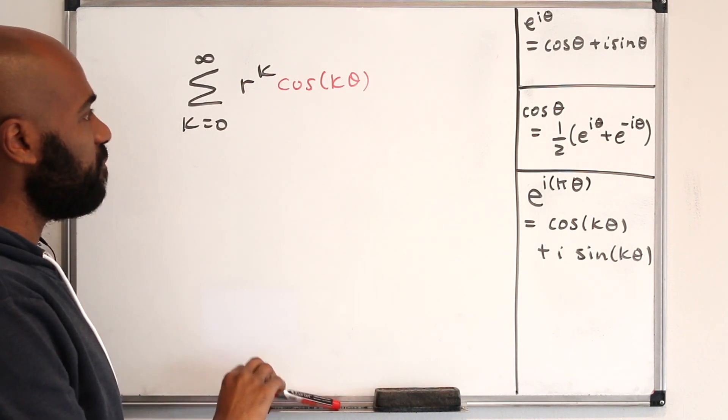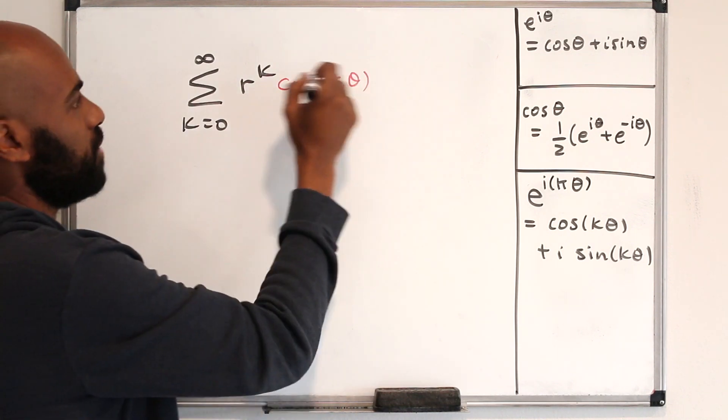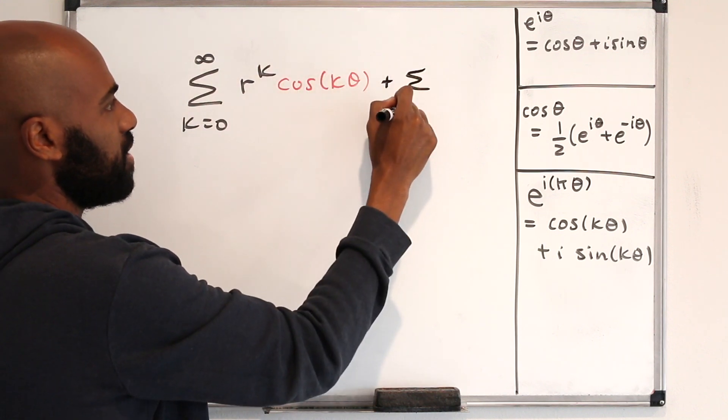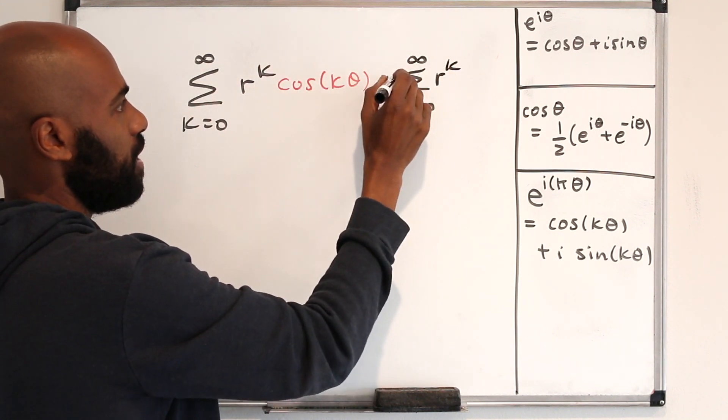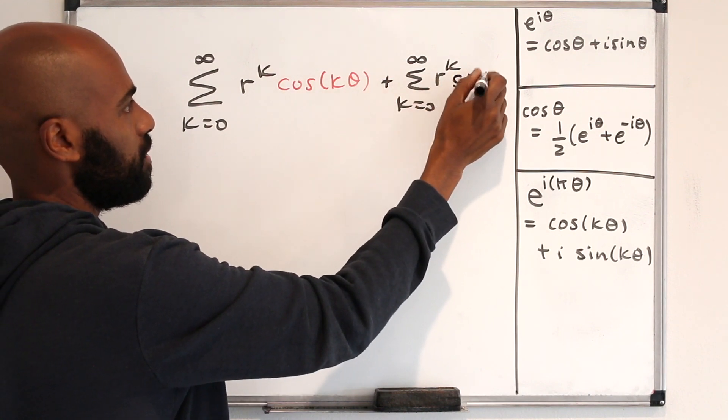So we can kind of think of padding this with a term that looks like the sum k equals 0 to infinity, r to the k, sine k theta,